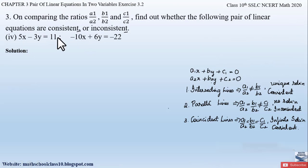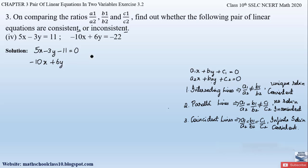Let us solve the fourth part of question number 3. Comparing with the general form of the pair of linear equations, let us equate these two equations to zero. The first equation gives us 5x minus 3y minus 11 equal to 0, and the second equation gives us minus 10x plus 6y plus 22 equal to 0.